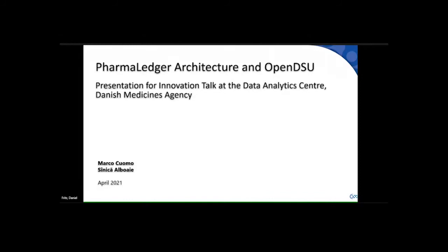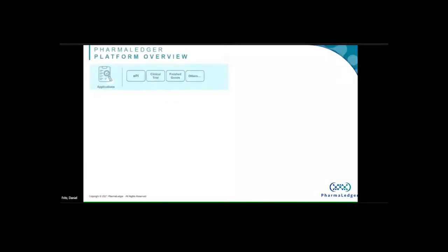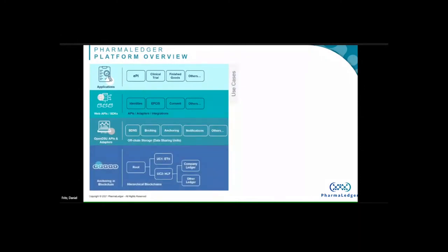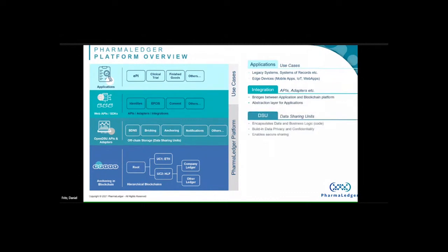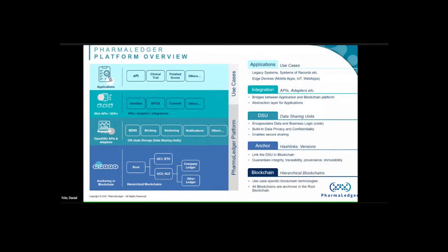This is Marco Cuomo from Novartis. I'm an architect responsible for blockchain, and I'm co-leading the PharmaLedger architecture with Sinica from AxaLogic. This is the high-level architecture picture showing different layers. PharmaLedger platform is not a monolithic blockchain technology — it is dynamic and flexible. At the bottom layer, we call this hierarchical blockchains: we do not have one blockchain for everything. We support any kind of blockchain technology. For EPI, we are currently using Quorum, which is Ethereum-based. For another use case, we could use Hyperledger Fabric.